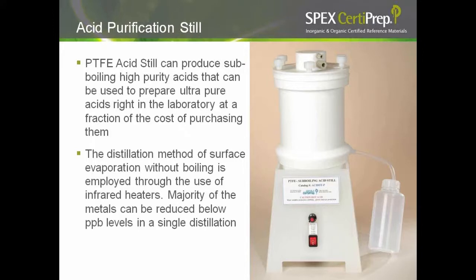An economic and effective way to produce ultra-high-pure acid is to use a PFA acid still. This employs a distillation method of surface evaporation without boiling through the use of infrared heaters. The created acid vapor is condensed and collected in a PFA or Teflon bottle — a process that avoids transport of particulate aerosol with the distillate. The PFA still can handle all common acids except sulfuric acid. With this process, the majority of metals can be reduced below microgram per liter in a single distillation.